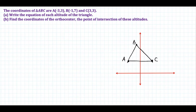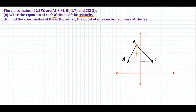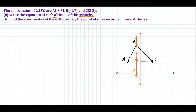The first thing we need to do is write the equation of each altitude of the triangle. So that means we're going to be writing the equation of three lines. The easiest one to do is the altitude through vertex B, and the reason is that side AC is horizontal. So if we need to write the equation of a line perpendicular to a horizontal line, we're writing the equation of a vertical line. The equation of a vertical line is in the form x equals a number — and that number is negative 1.